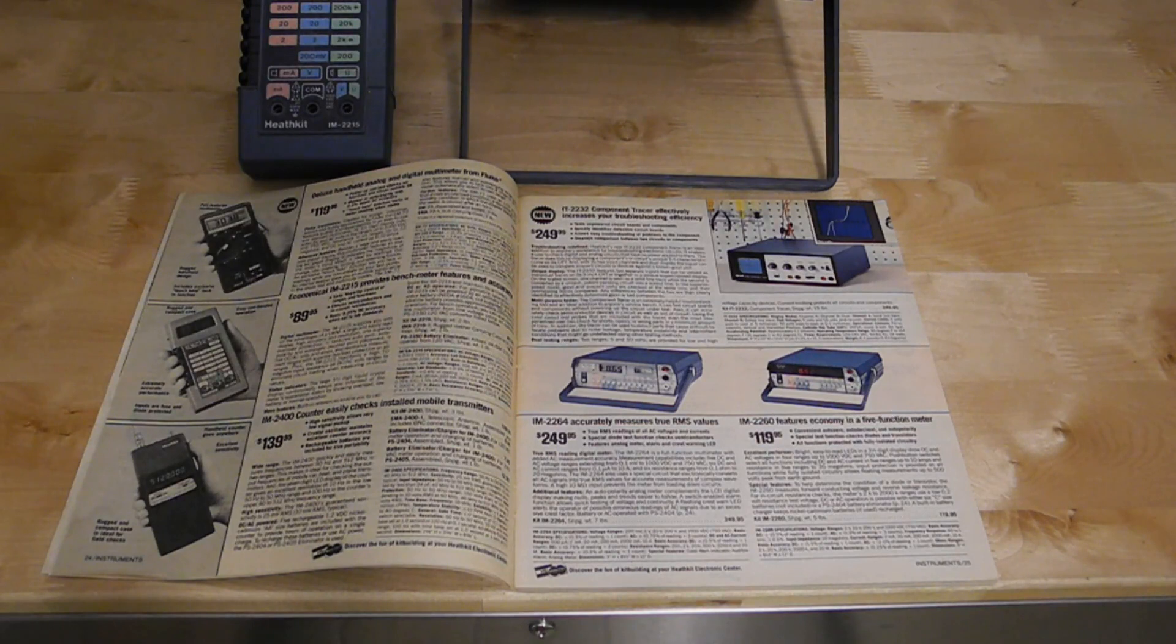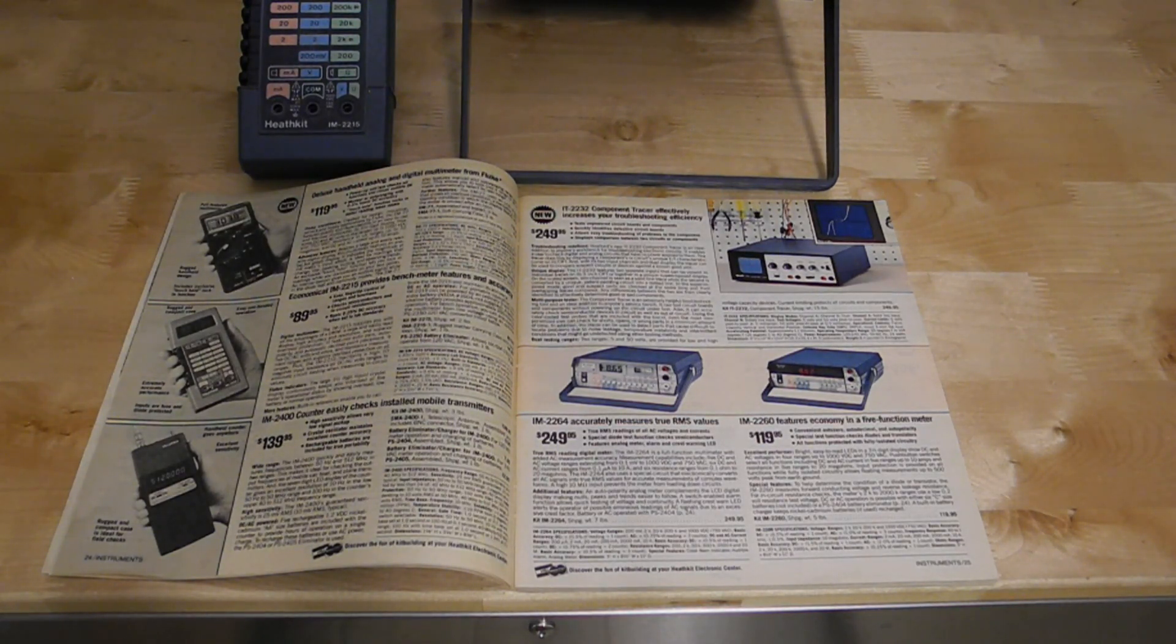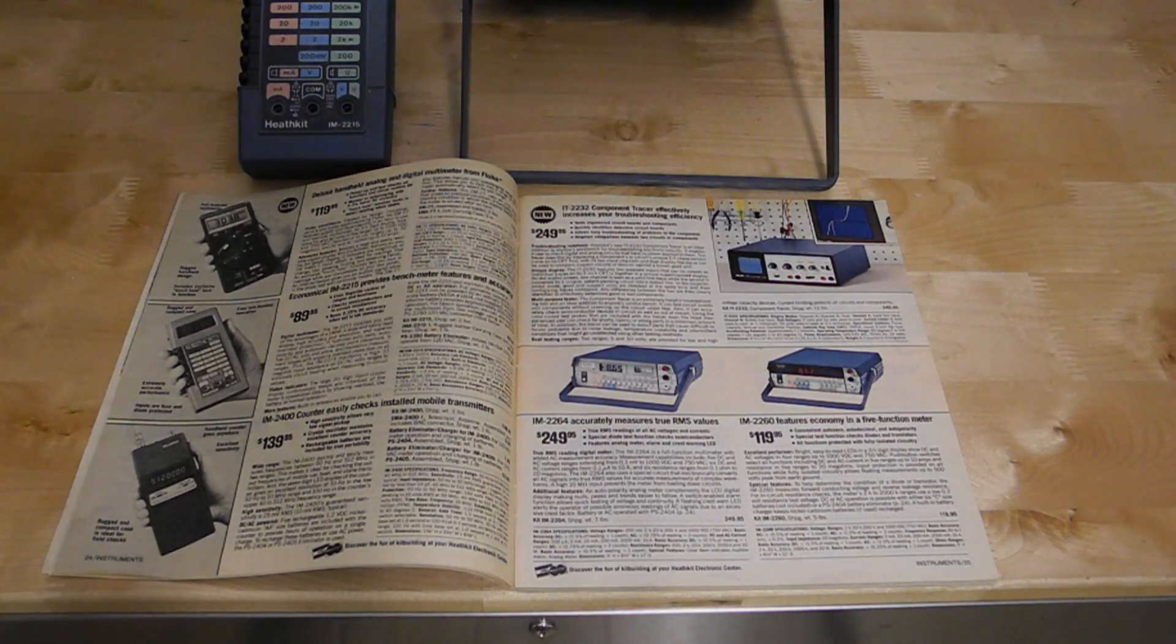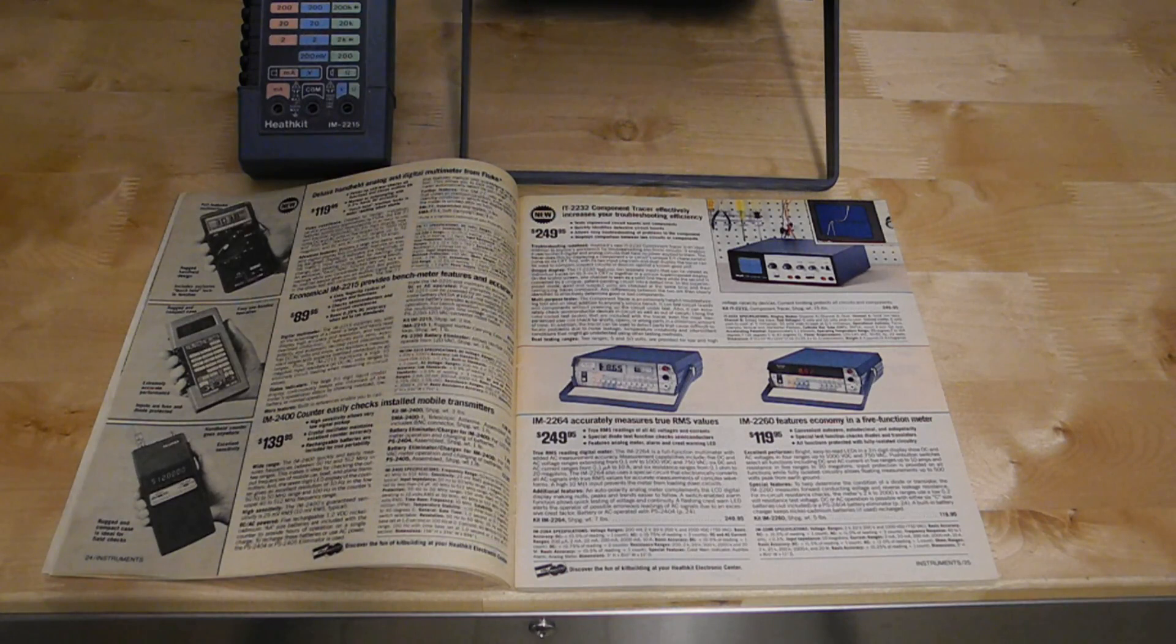This 1984 Heathkit catalog shows the IM2260 selling for $119.95. The more expensive IM2264, which featured an LCD display, true RMS measurements, and an analog meter, was selling for $249.95.